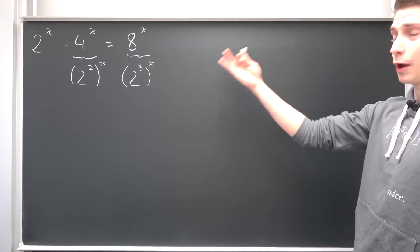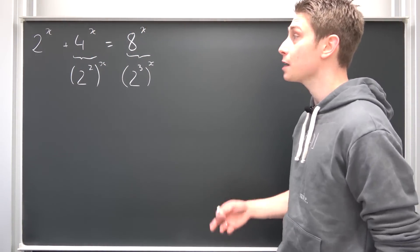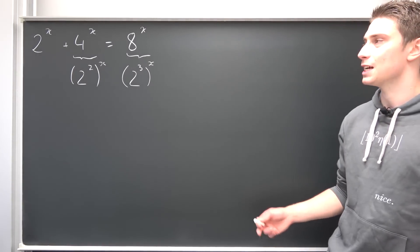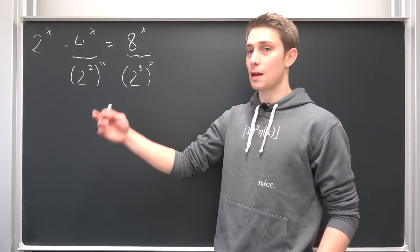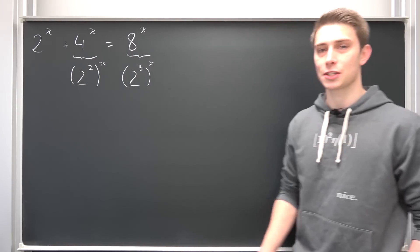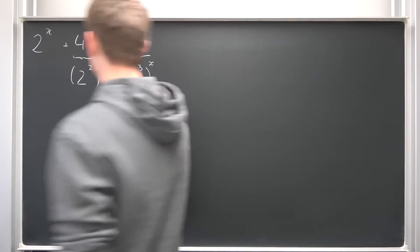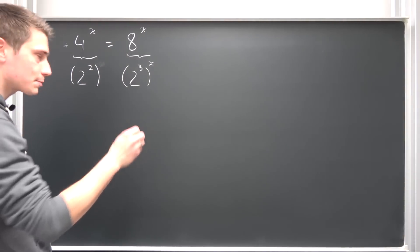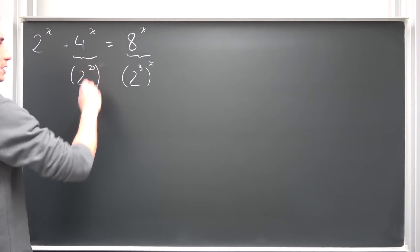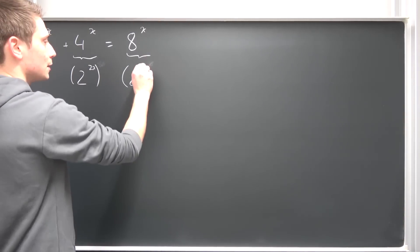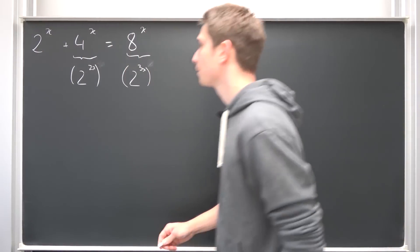Now we have modified the problem like this. It makes it way easier actually, because if you have something to the something to the something, it's just something to the something times something. So if we have 2 to the 2 to the x power, this is 2 to the 2 times x power. Same thing here, 2 to the 3 times x power.